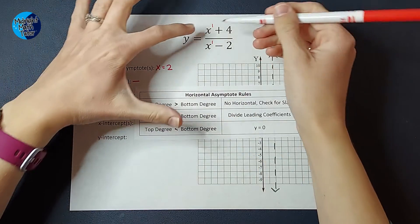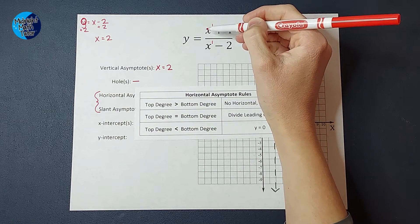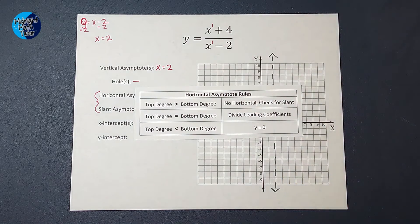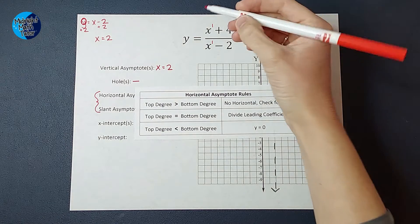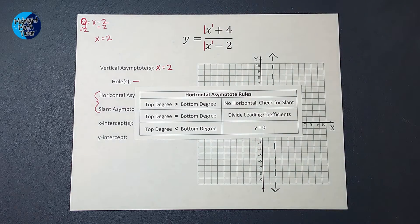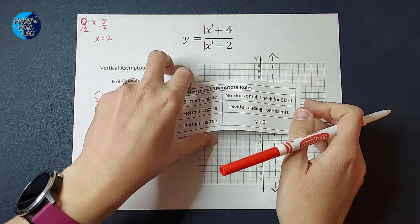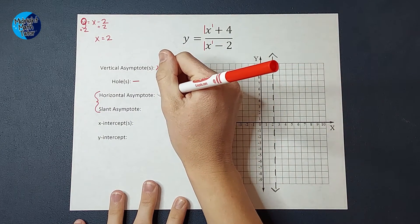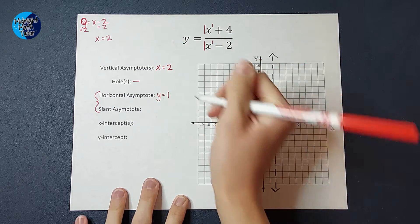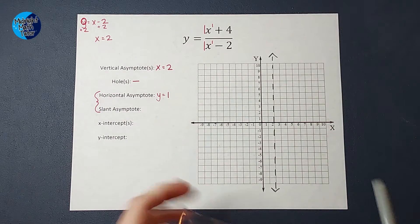So for ours, the top and the bottom are equal to each other, so I'm going to divide my leading coefficients. Now the leading coefficient is the number in front of the variable with the highest exponent, which in this case, there's nothing there, but there's actually a one. This could be one x. So when I divide those leading coefficients, I get one over one, which simplifies down to just one. So my horizontal asymptote is y equals one. And I can go ahead and represent that with a dotted line.